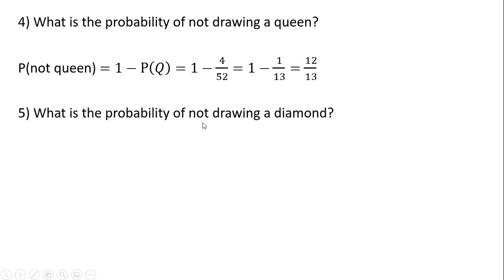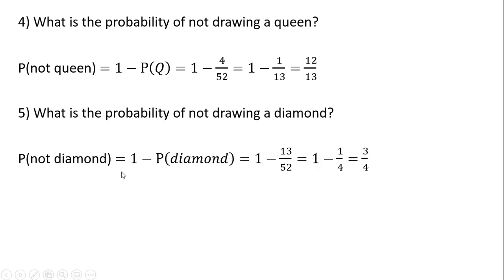What is the probability of not drawing a diamond? It's going to be one minus the probability of drawing a diamond. There are 13 diamonds, so we get three-fourths. The probability of not drawing a diamond is three-fourths.